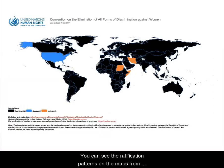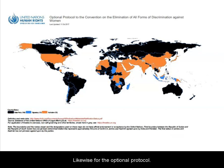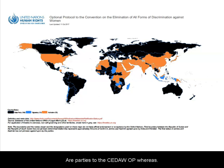You can see the ratification patterns on the maps from the United Nations. Those parties in dark blue are state parties to CEDAW. Likewise, for the Optional Protocol, the states in dark blue are parties to the OP, whereas those nation states in orange are not state parties.